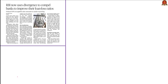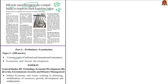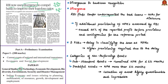The third news article of the day is titled 'RBI Now Uses Divergence to Compel Banks to Improve Their Loan Loss Ratios.' This article talks about the use of divergence in recognizing bad loans, appearing on page 13 in Chennai, Delhi and Thiruvananthapuram editions and page 15 in Bengaluru edition. It is helpful in your prelims preparation under current events and economic development, and in mains General Studies Paper 3 under Indian economy. Divergence takes place when the Reserve Bank of India finds that a lender has under-reported bad loans in a given year.